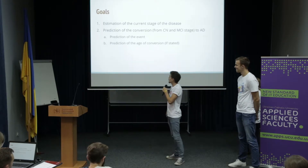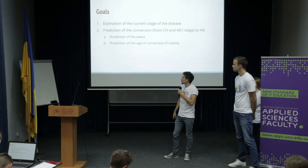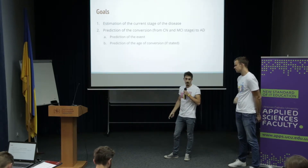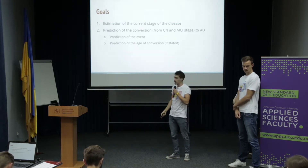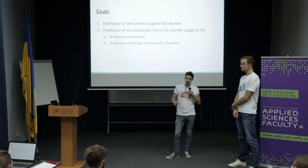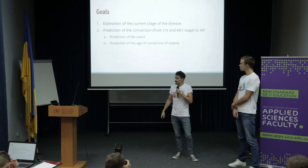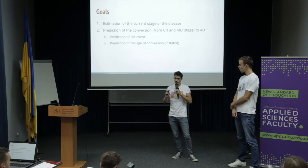The first goal was to estimate the current stage of the disease — to understand from the tests whether the patient is healthy, in the middle stage, or already has the disease. Then we try to predict if the patient converts from the first two stages to the disease, and also understand at which age they will convert.